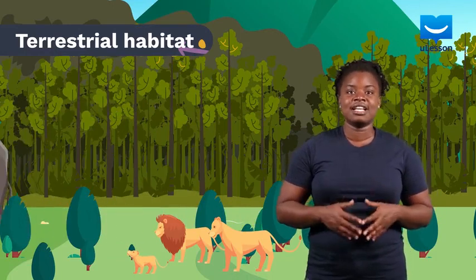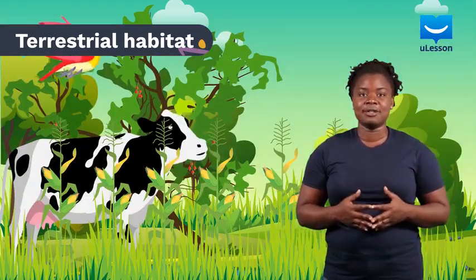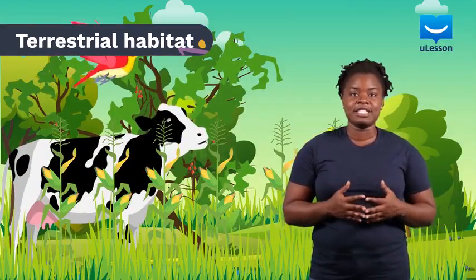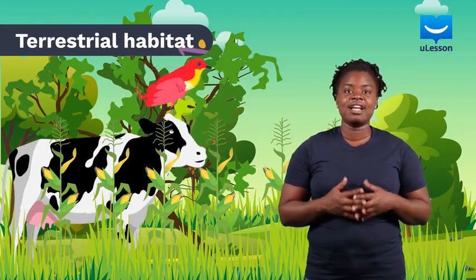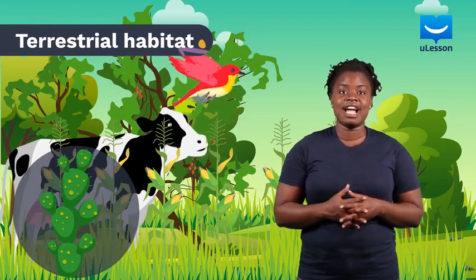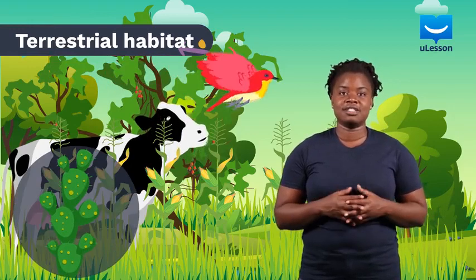Organisms that live in terrestrial habitats include elephants, lions, cattle, maize plants, trees, cactus, and birds.